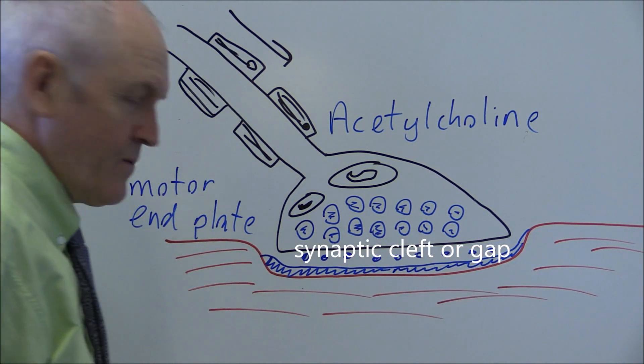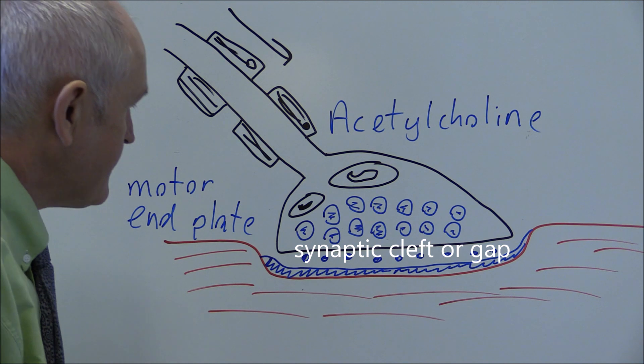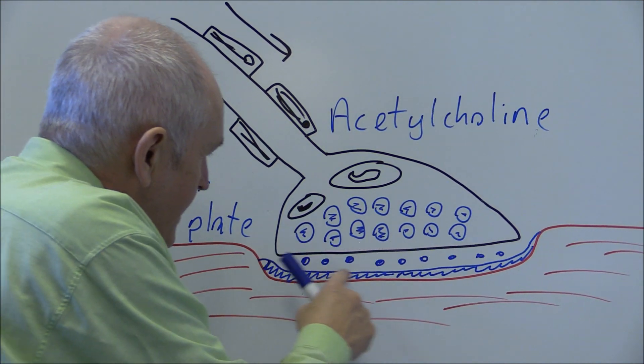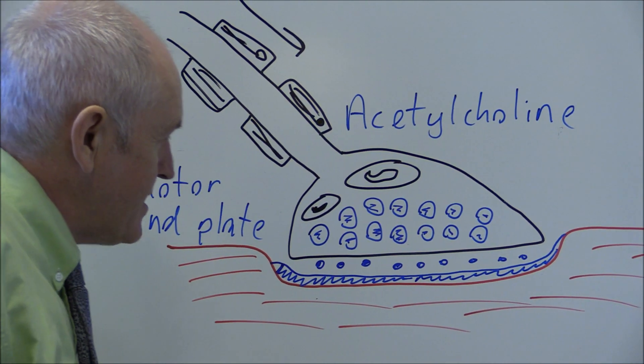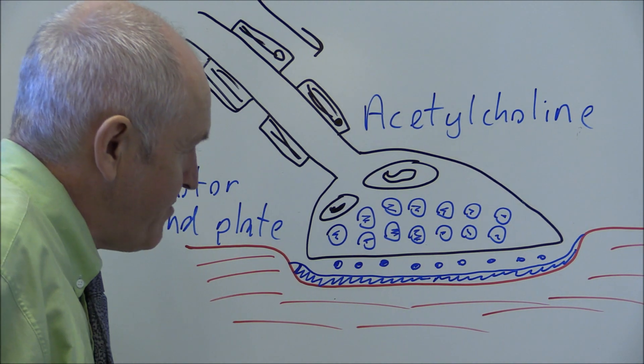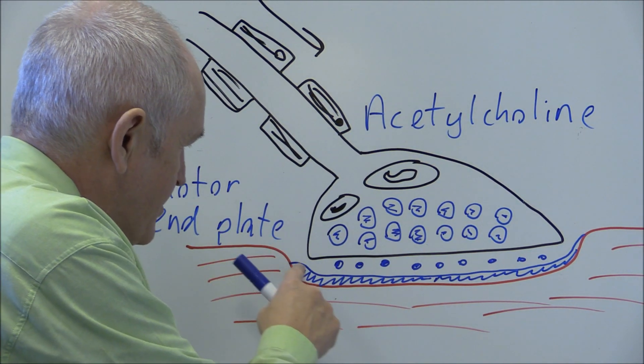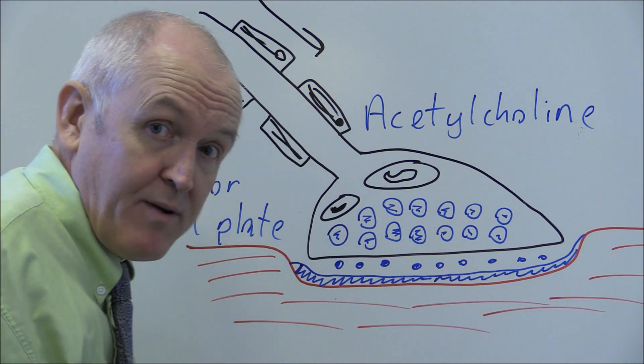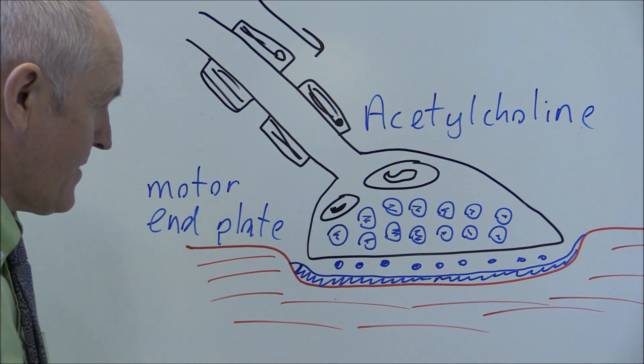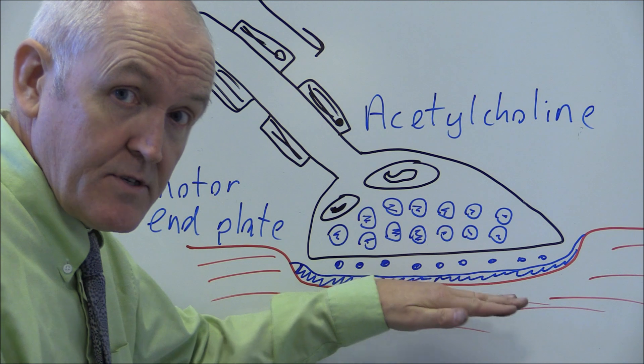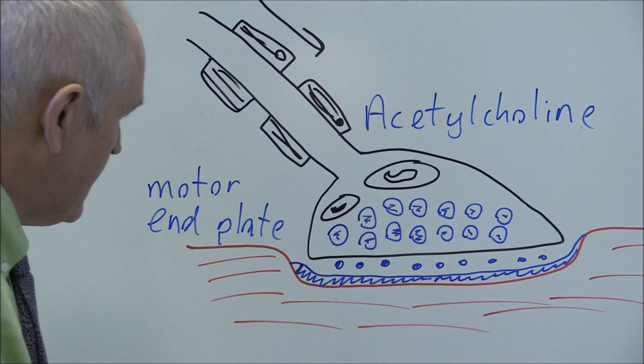The acetylcholine will diffuse across, link into the acetylcholine receptors on the post-synaptic membrane. In this case the post-synaptic membrane is the motor end plate. There's not another further neuron here, it's got where it wants to get to.